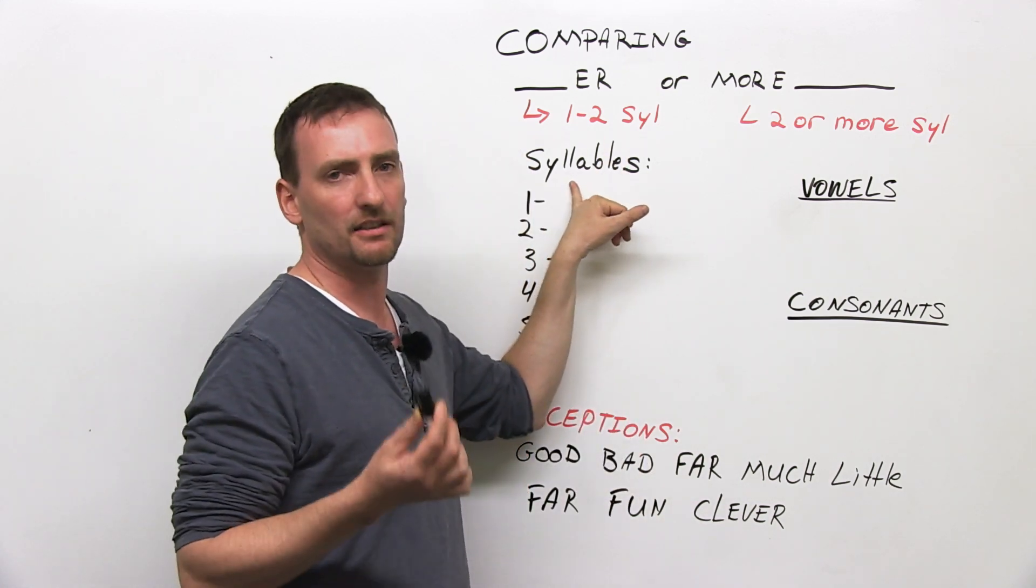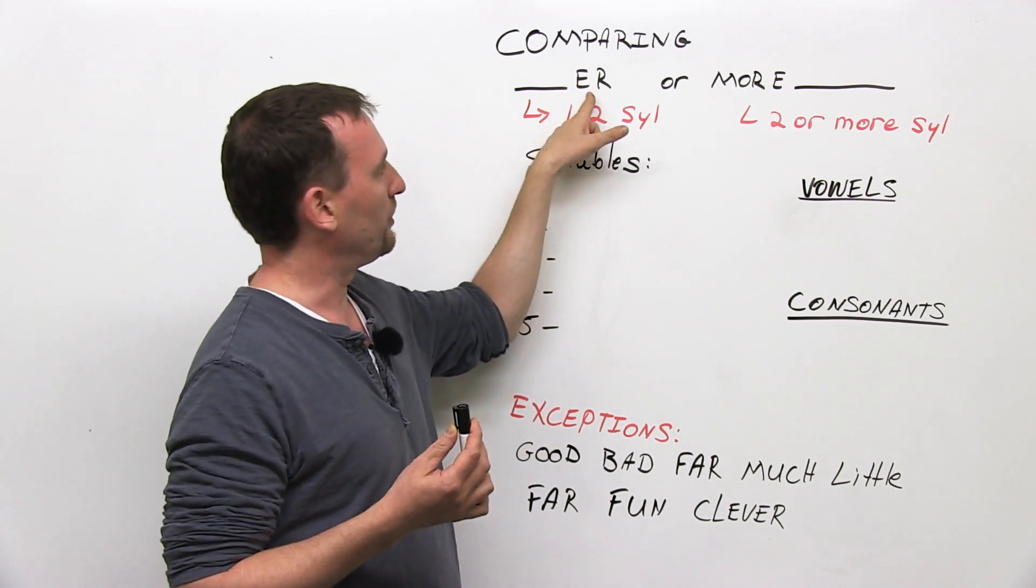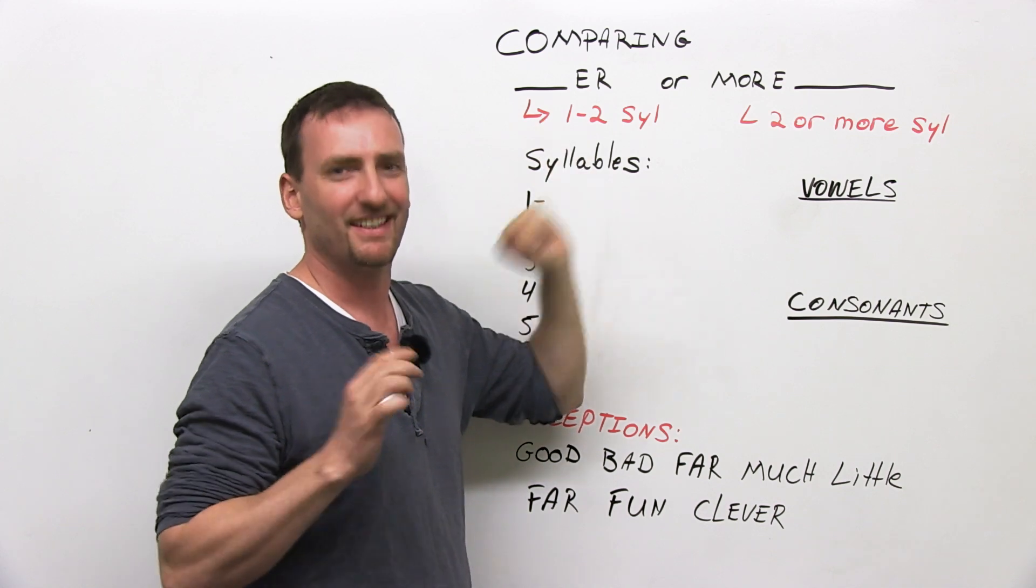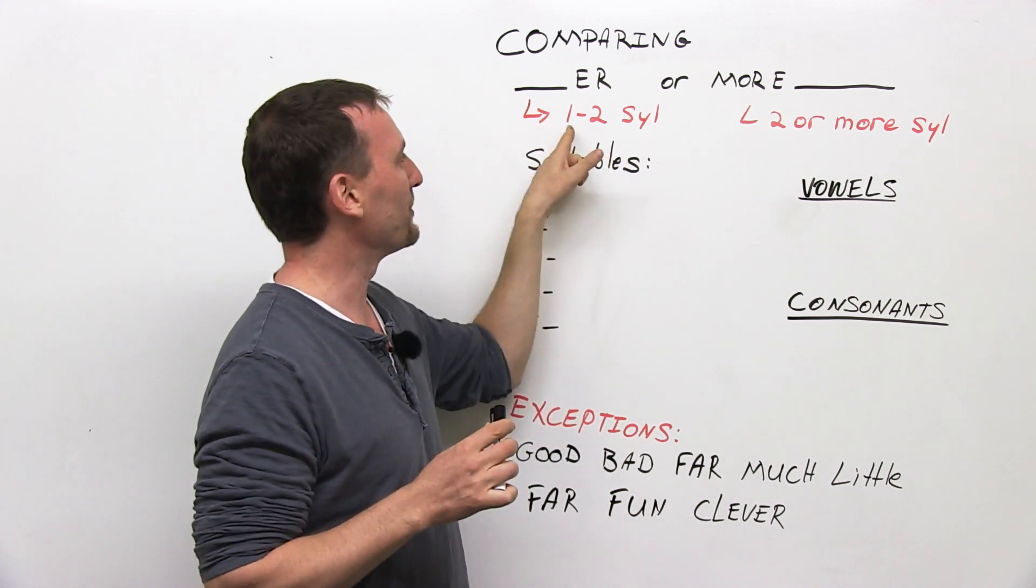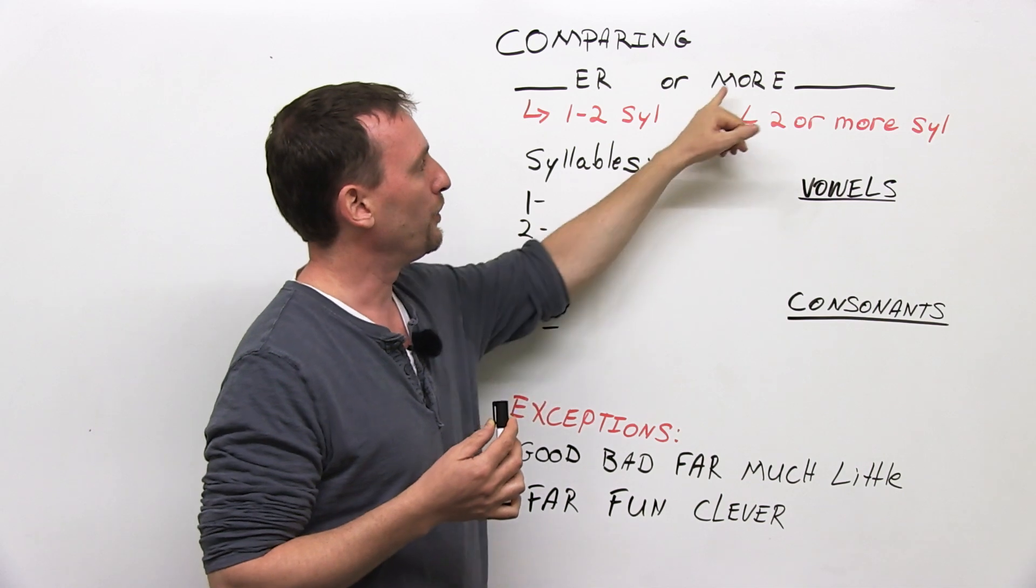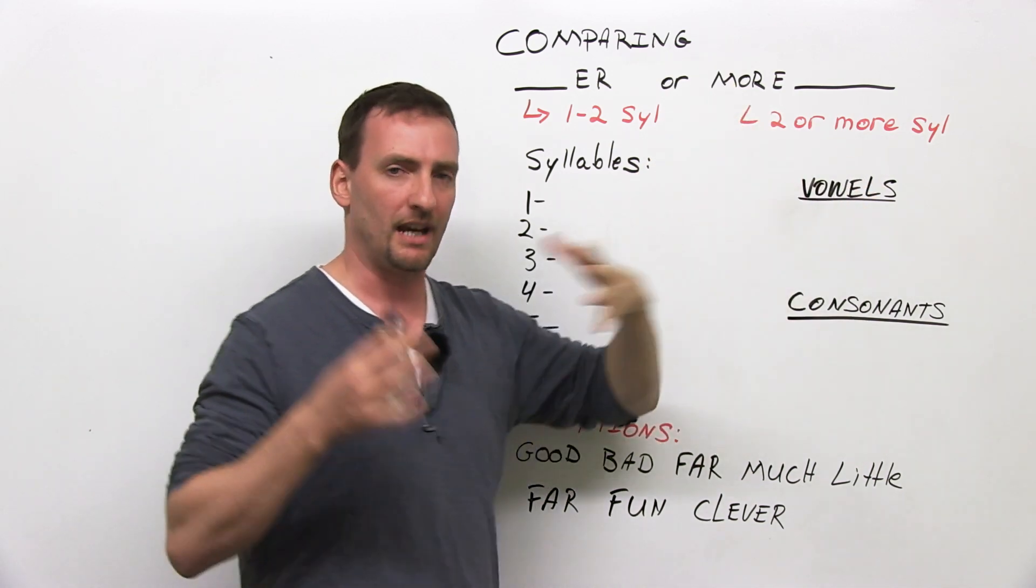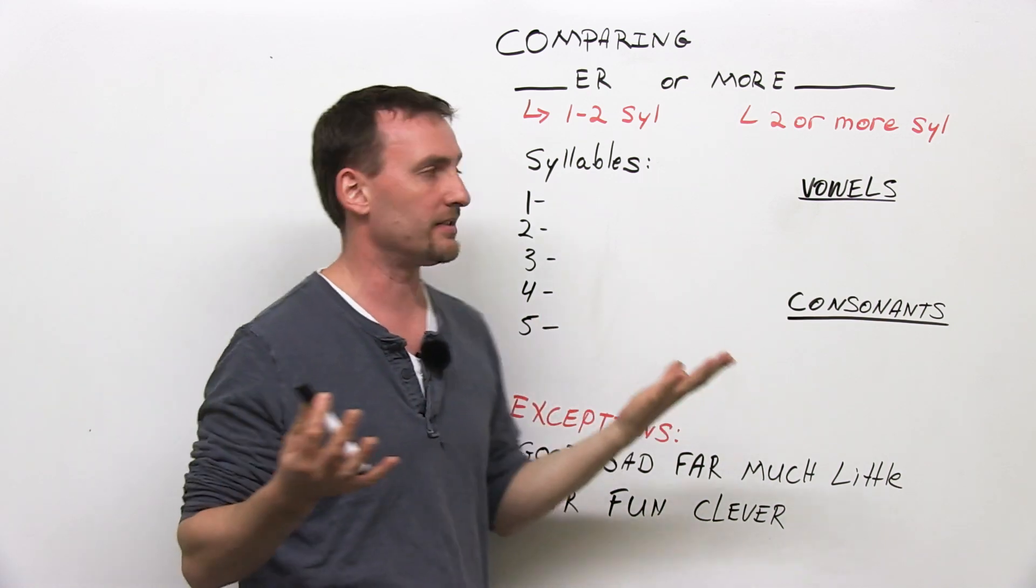We're going to look at syllables. We use '-er' with words that have one or two syllables. We use 'more' with words that have two or more syllables. Now, before I explain that, what are syllables?